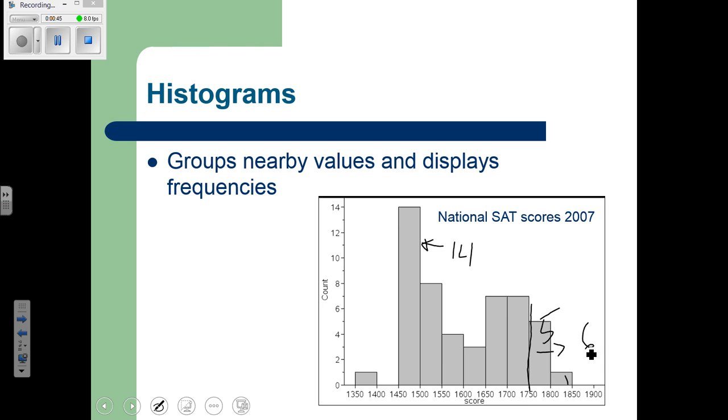One thing that the histogram is not going to allow us to do, if I asked you how many students scored a 1520, that's something that the histogram doesn't allow you to actually see. We can see that there's this group of eight students that scored somewhere between 1500 and 1550 in this particular bin, but we don't know what the exact scores are. So there's one of the limitations to a histogram.